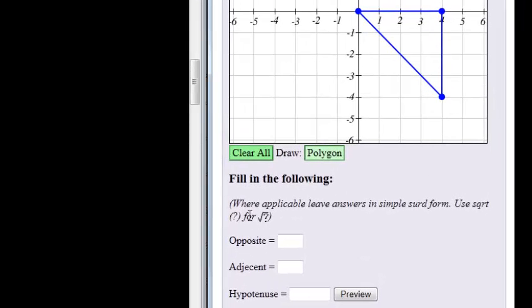They ask us to calculate, to fill in the following, the opposite side length. So that's my angle. Opposite my angle is this side length. We see it's 1, 2, 3, 4 units but it's down so it's negative 4. So my opposite is negative 4.